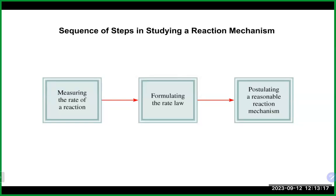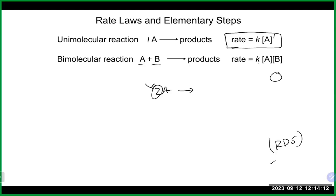There are two ways to identify the rate-determining step: by comparing the rate law of each elementary step to the experimental rate law (the matching one is the slow step), or by looking at the mechanism where steps are labeled 'fast' or 'slow' directly. The slow step is the rate-determining step.